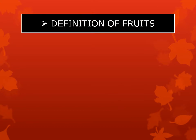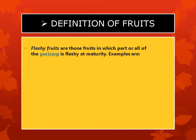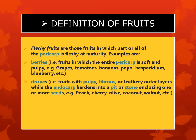First of all, I will explain the definition of fruits. So dear students, listen to me very carefully. Point 1: fleshy fruits are those fruits in which part or all of the pericarp is fleshy at majority. Point 2 is berries — fruits in which the entire pericarp is soft and pulpy. For example, grapes, tomato, bananas, blueberries, etc.